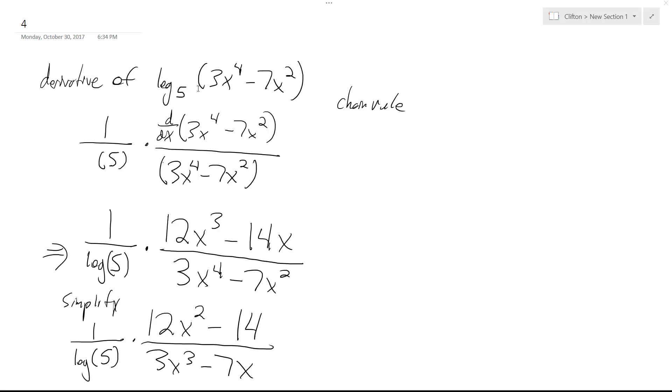Alright, so what I have here is I want to find the derivative of the log base 5 of quantity 3x raised to the 4th minus 7x squared.